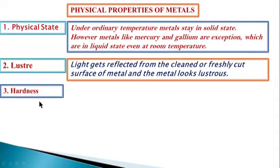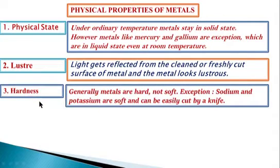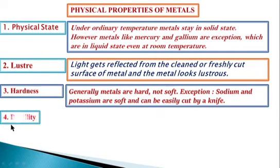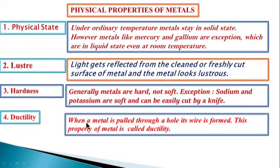Third, hardness — generally metals are hard, not soft. Exceptions: sodium and potassium are soft and can be easily cut by a knife. Fourth, ductility — when a metal is pulled through a hole, its wire is formed. This property of metal is called ductility.